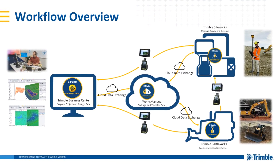The process begins in the office with Trimble Business Center, where you can review your data, prep your data, model your data, and then publish that data through Works Manager out to Trimble SiteWorks or EarthWorks. You'll also notice that we have an alternate method — if you don't have connectivity, you can use a USB thumb drive to send data from Business Center directly to a field device, or use that same USB stick to go from one device to another.